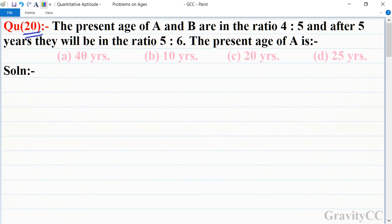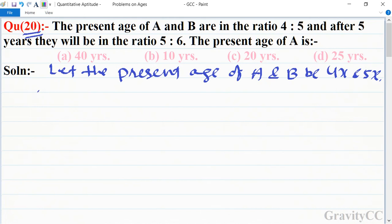of A and B - so let the present age of A and B be 4x and 5x. According to